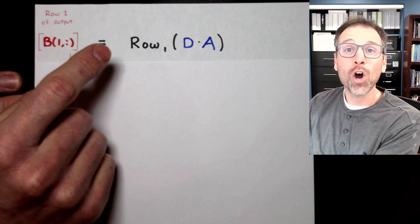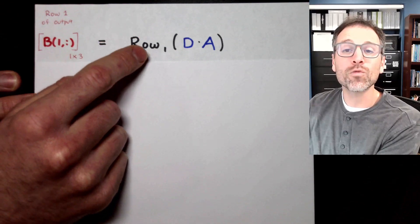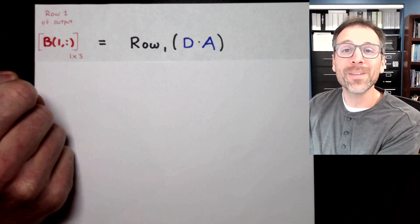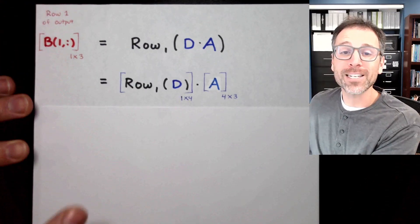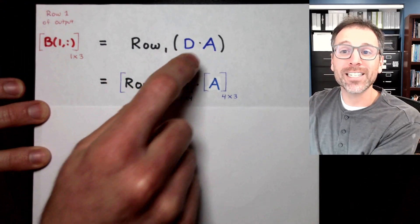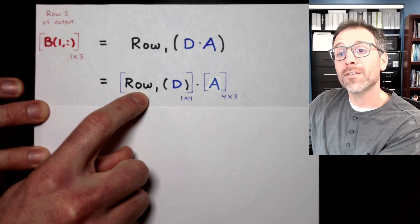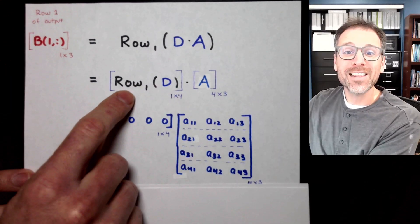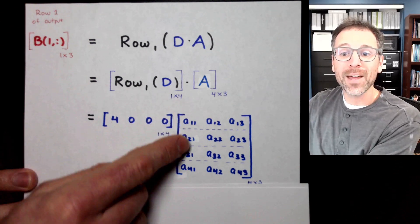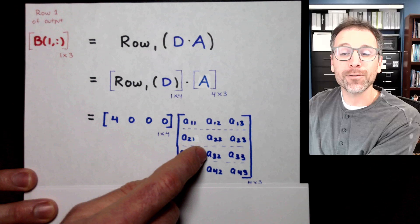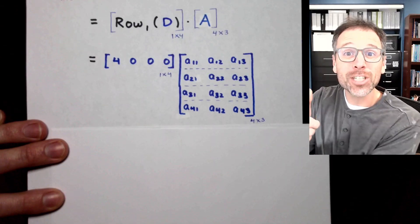For those of you watching at home, pause the video now and see if you can remember the definition of what this is, write it down for yourself. Here I go for myself, row 1 of the product D times A is going to be row 1 of D multiplied by A. But we've just seen that row 1 of D is 4, 0, 0, 0, and then A, here we have the entry by entry version completely general.